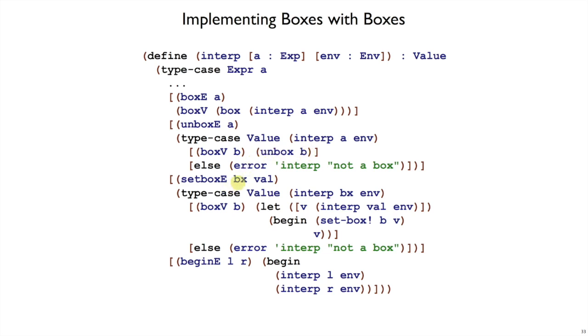Setbox is similar. We evaluate the first expression to hopefully get a box, otherwise we complain. We evaluate the second expression to get the new value to put in that box, and we put the value in the box using plate's setbox. In curly, I don't want to add a special void value, so let's define curly's setbox to return the new value that it put inside the box. So that's why we put V here. After we change the value inside the box, we'll just return that value as the result of setbox.